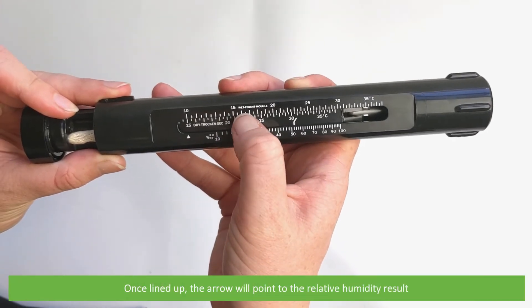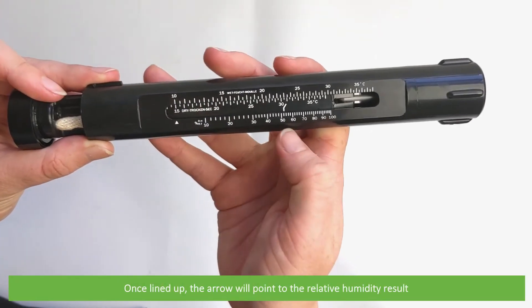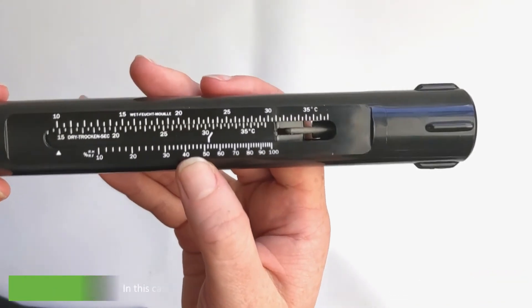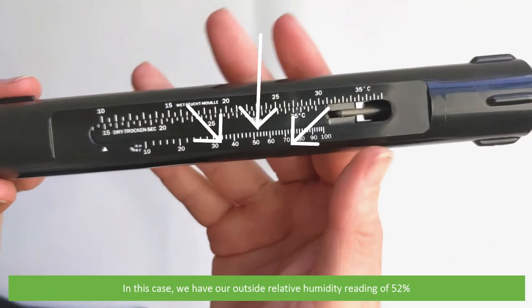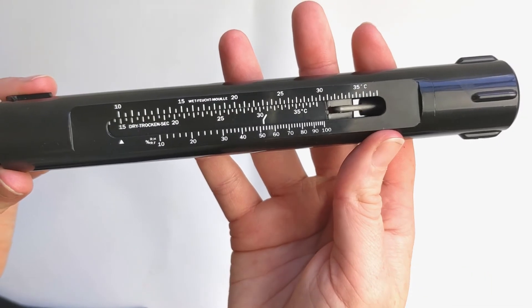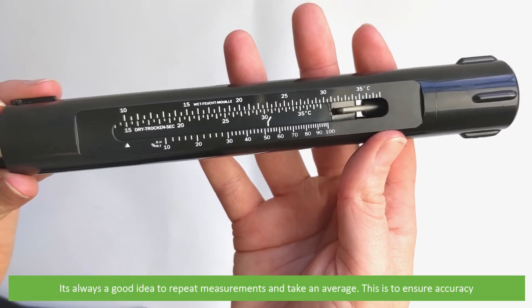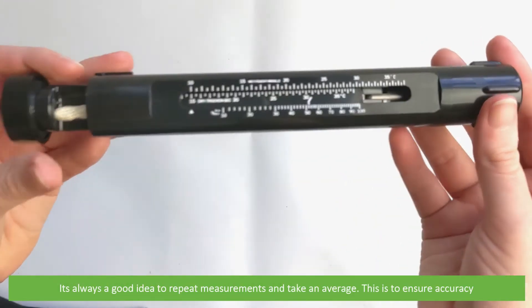Once lined up, the arrow will point to the relative humidity result. In this case, we have our outside relative humidity reading of 52%. It's always a good idea to repeat measurements and take an average to ensure accuracy.